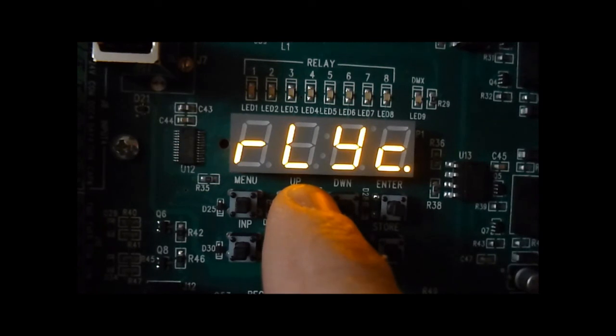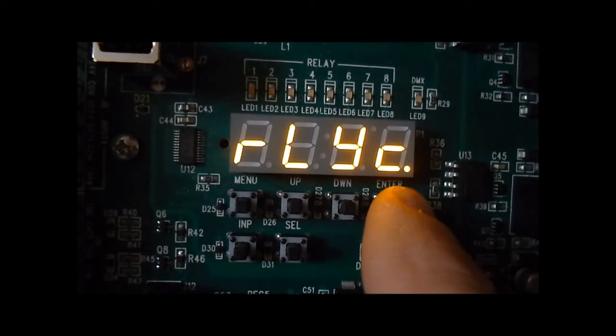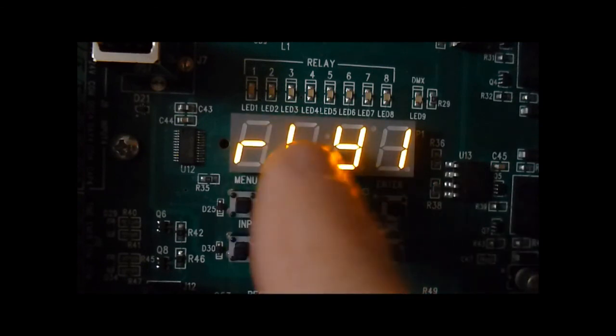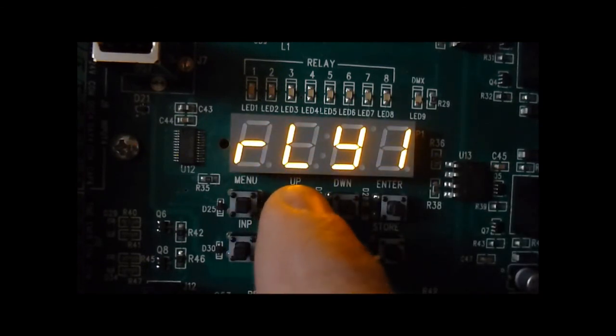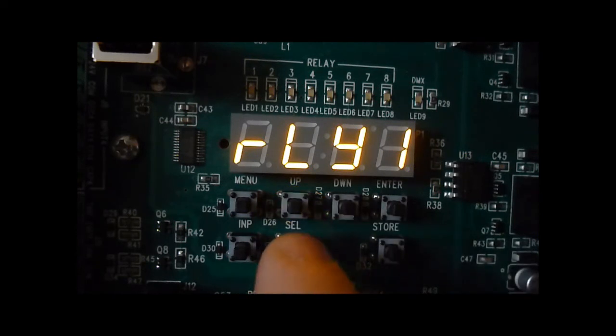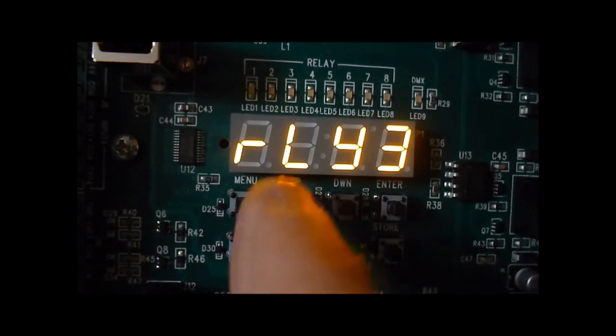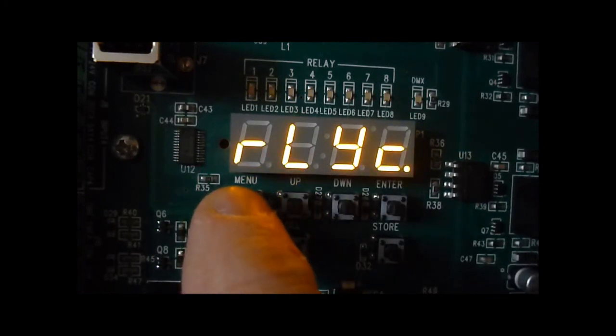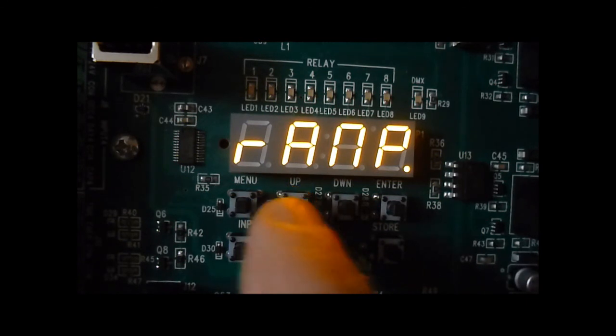The next menu item is relay control. This is a single zone at a time relay test, temporary. Press enter and we can scroll through all the zones - four zones for this unit. Press the select button and the relay goes on, press it again and the relay will go off. Scroll to the next relay. This will also put the zero to ten volt output at 100%.